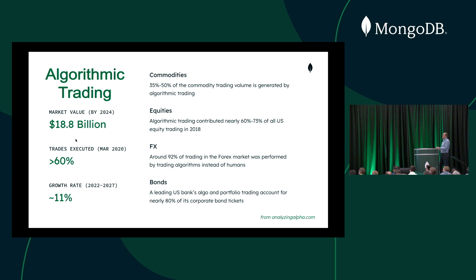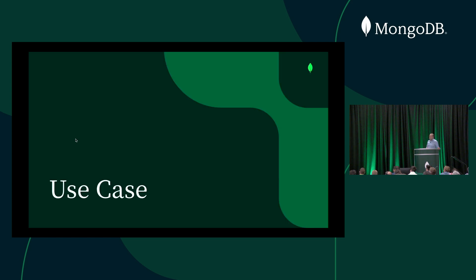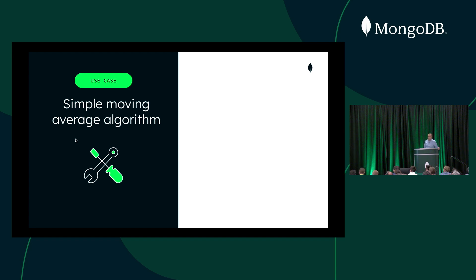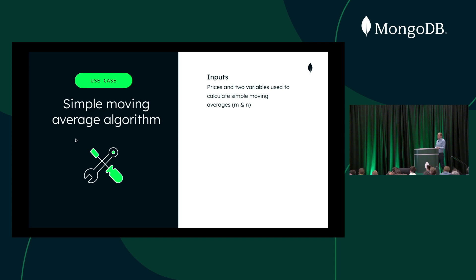So we're going to use a simple moving average algorithm. A moving average is just an average of the last few data points — nothing super sophisticated. Our input is pricing data, with prices arriving every minute. In a real-life scenario, you'd be connected to an exchange feed pushing data into your system, or a market data provider. For this exercise, we have prices in a CSV file. We'll also have two variables — M and N — used to calculate moving averages: one calculates the average from the last M minutes, the other from the last N minutes.